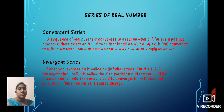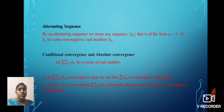Next, we define alternating sequence. By an alternating sequence, we mean any sequence {An} of the form An = (-1)^n · Bn for some non-negative real numbers Bn.